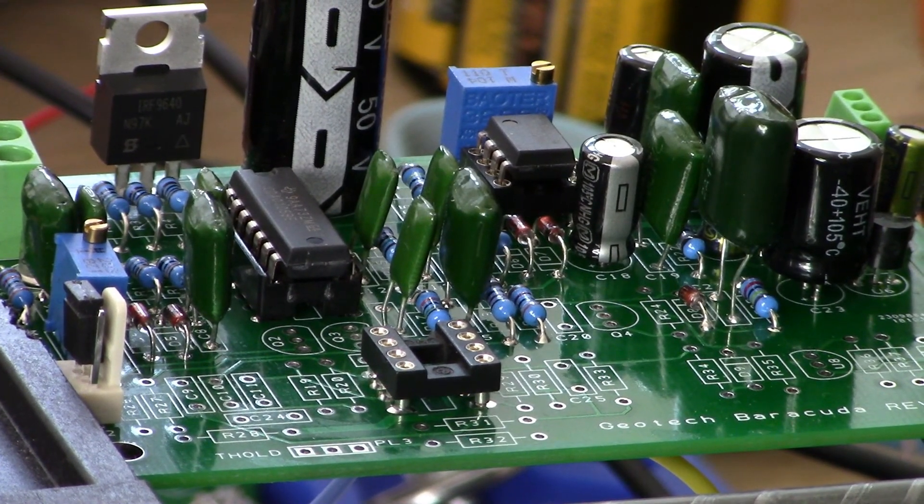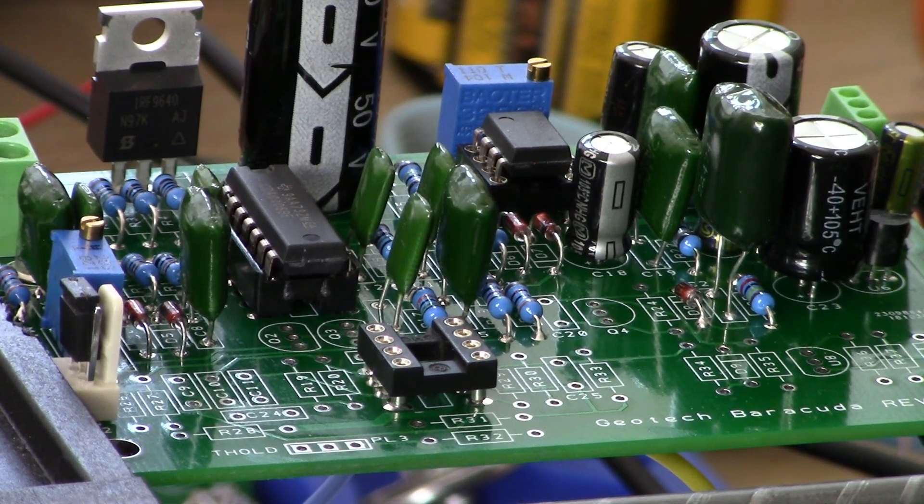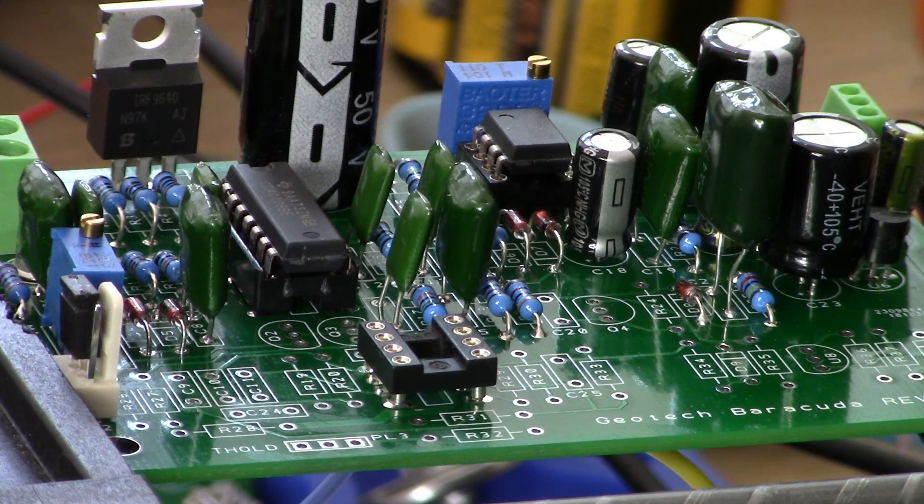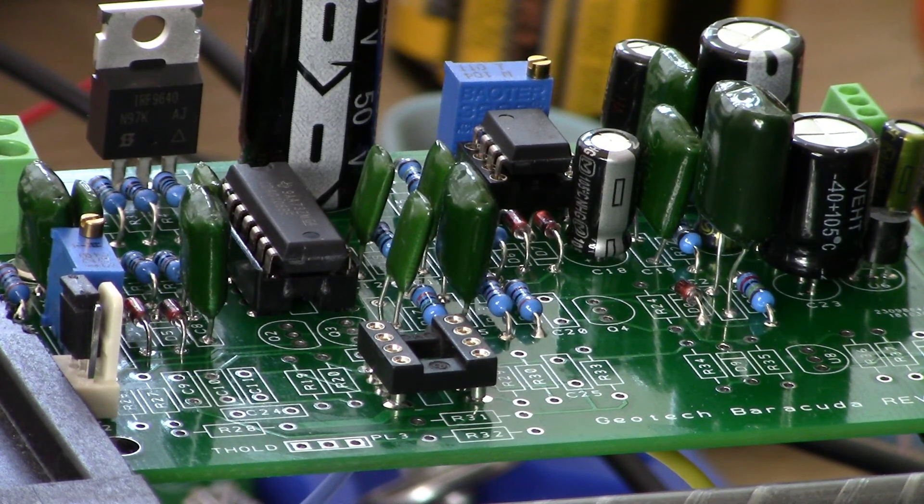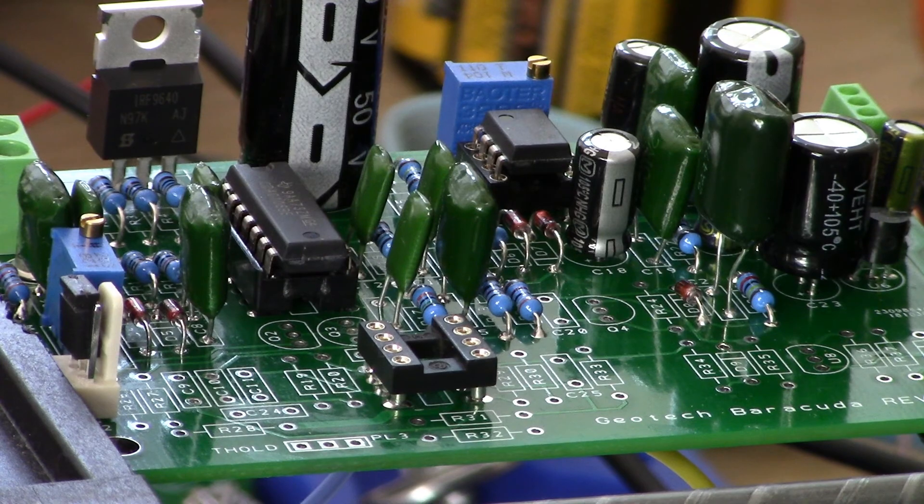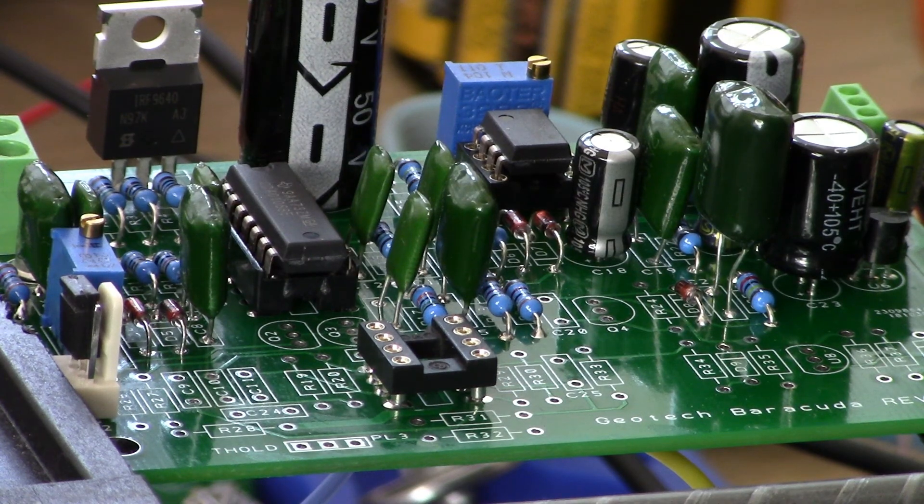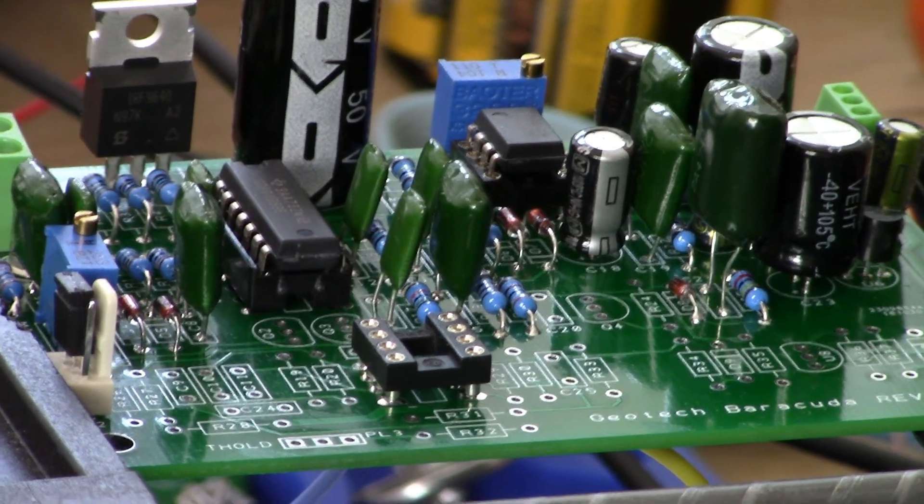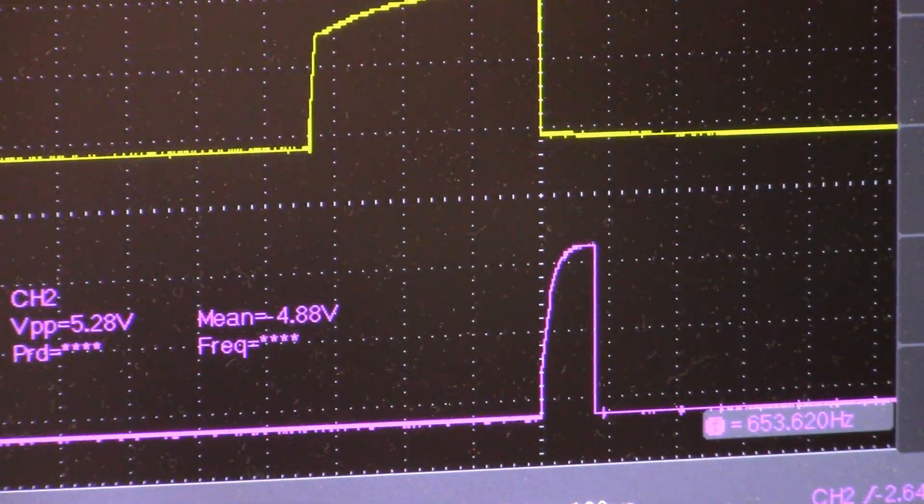Okay guys, welcome back. We are on step six of the Barracuda DIY metal detector project, and step six is the sample pulse generator. I'm showing you a shot of the PCB as it is now with all the components populated up through step six. Next we'll take a look at a shot of the oscilloscope screen, and we will be adjusting for a minimum sample delay of 20 microseconds.